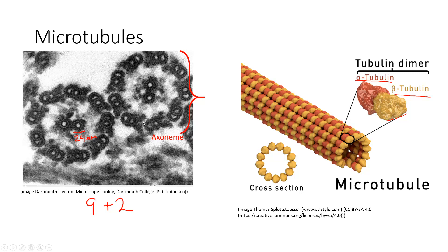The axoneme forms the main core structure of the motile organelles, flagella and cilia. If you look at a spermatozoan — the swimming mature sperm cell — you will find an axoneme running down the length of that tail; that's what allows it to move. If you look at the cilia found in your upper respiratory tract or in the female reproductive system, you would find axonemes inside those cilia, which allow them to move and impart current to fluids.